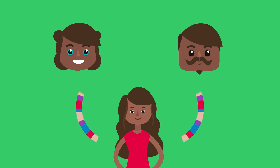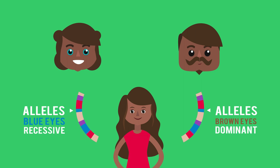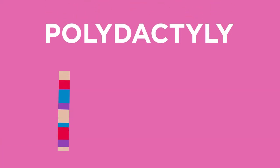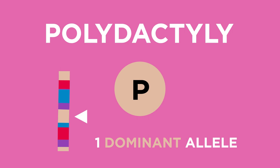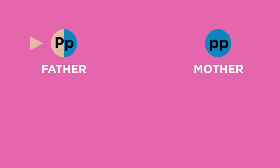Genes come in different forms called alleles. Alleles may be recessive or dominant. So going back to polydactyly, polydactyly is caused by a dominant allele shown as a capital P. You only have to have one copy of this allele to have the condition.